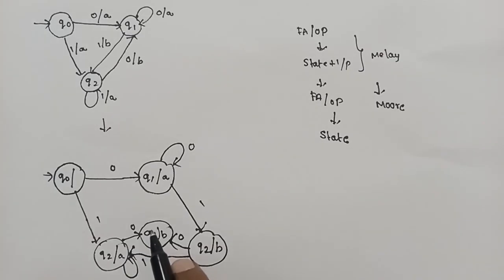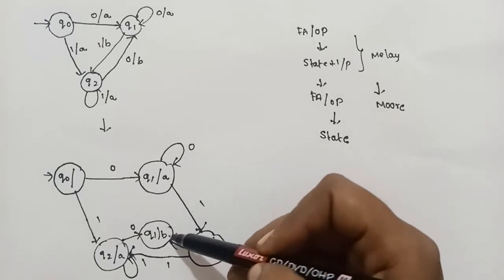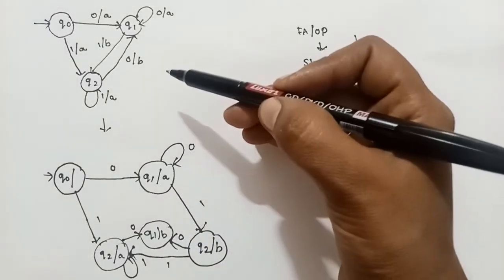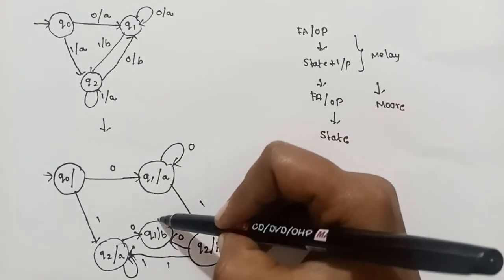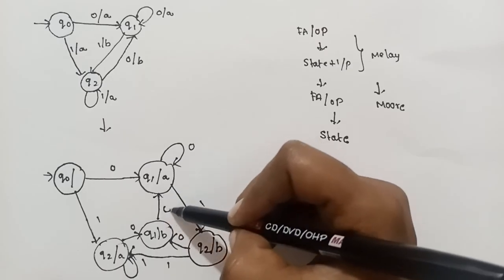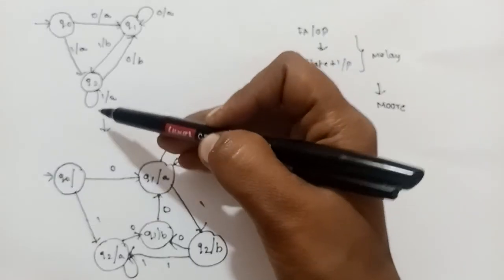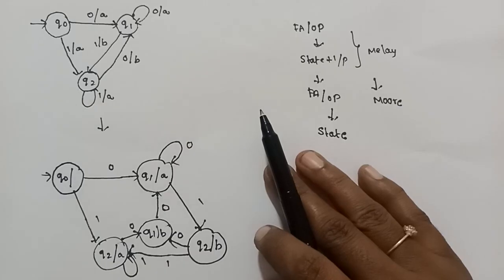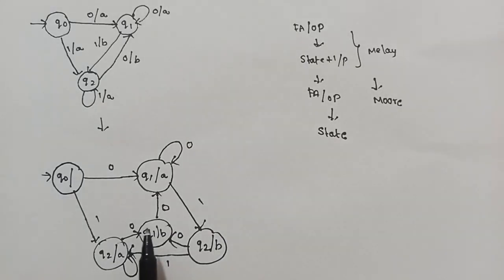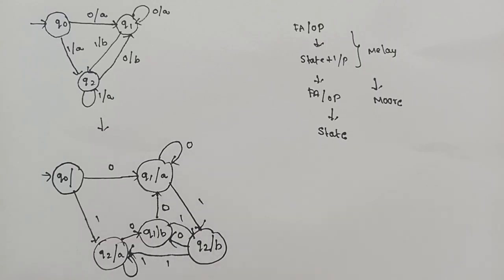Next equal state Q1 with output B. Q1 on input 0 goes to Q1 with output A. Q1 on input 1 goes to Q2 with output B. Again the added states have output A.